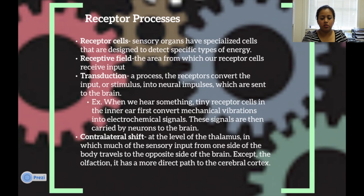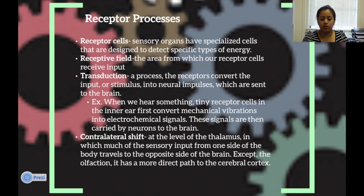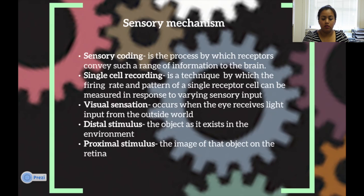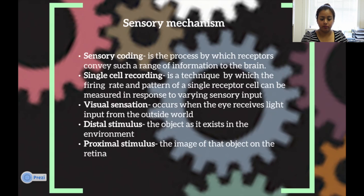Contralateral shift: at the level of the thalamus, much of the sensory input from one side of the body travels to the opposite side of the brain, except the olfactory system, which has a more direct path to the cerebral cortex. Sensory coding is the process by which receptors convey a range of information to the brain. Single cell recording is a technique by which the firing rate and patterns of a single receptor can be measured in response to varying sensory input.